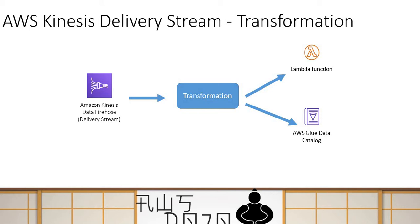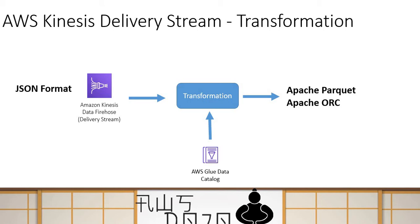When using Glue Data Catalog you do not need to write even a single line of code. You can simply transform your data using schema conversion. However, Glue-based transformation can only convert JSON format into Apache Parquet or Apache ORC format, so your source format must be JSON and your destination must be Apache Parquet or Apache ORC.